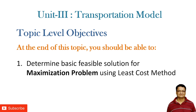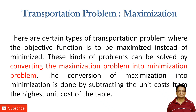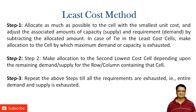At the end of this topic you should be able to determine the basic physical solution for the maximization transportation problem using the least cost method. A maximization transportation problem is one where the objective function is to maximize instead of minimize. Most transportation problems involve minimizing cost, but some require maximizing profit. We can solve this by converting the maximization problem into a minimization problem, using the least cost method with the help of one example.